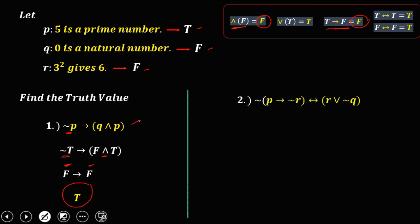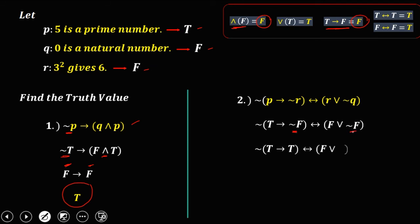For the second example, same process — substitute the truth values. p = true implies not r; r is false, so not false is true. Then not q: q is false, so not false is true. For implication, only TF is false; since this is true implies true, therefore this one is true. For disjunction, if there is true, the truth value is true. Since there is true, this one is true.